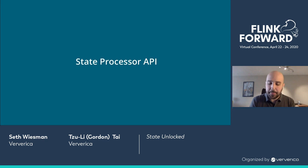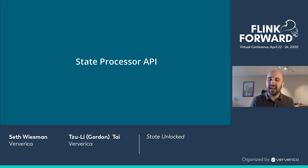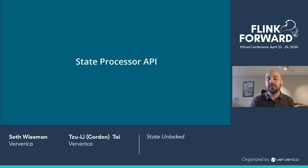That brings us to the State Processor API. We are talking about state being so important. With schema migration and state backends, the Flink community hopes to service the common 90% of use cases. But in such a large ecosystem, there is no way to offer solutions for every single user need. So the State Processor API is meant to support the other 10%. You should always use the built-in features if you can — always use native schema migration if available. But if you really do want to go from a list state to a map state, and you know how to do that custom mapping with your own Java code, this is the tool for you.